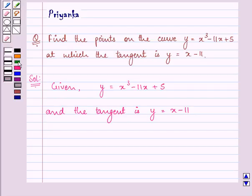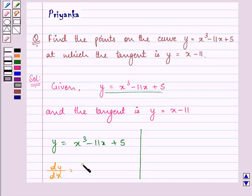Let us rewrite the equation to the curve once again. I am differentiating y with respect to x, we have 3x square minus 11.